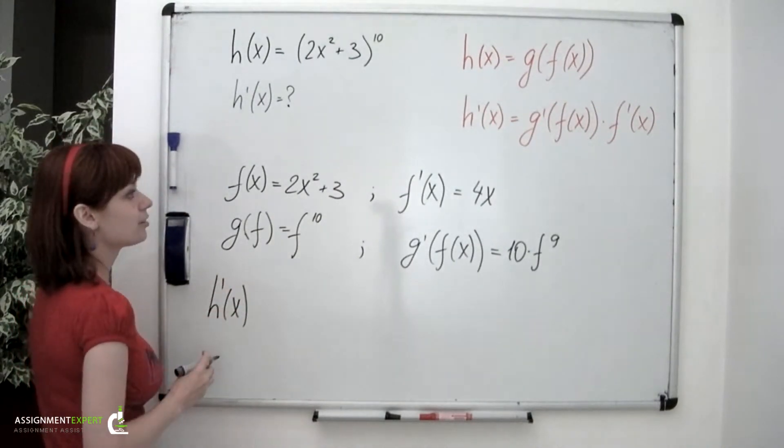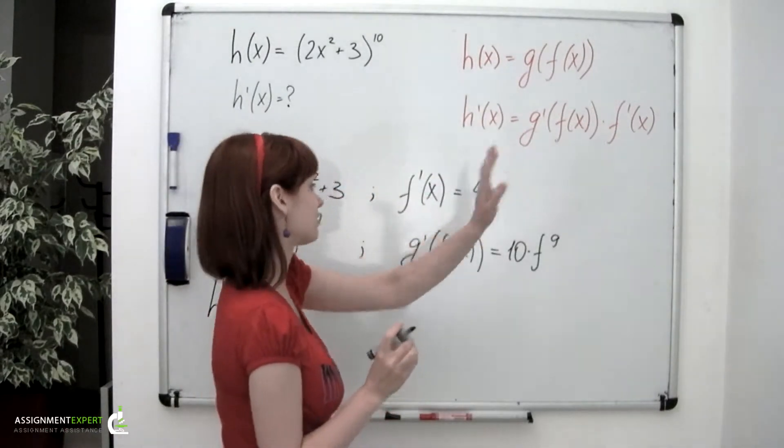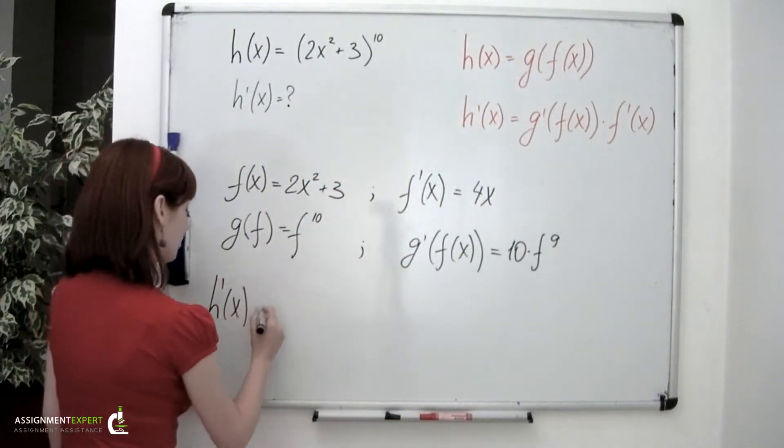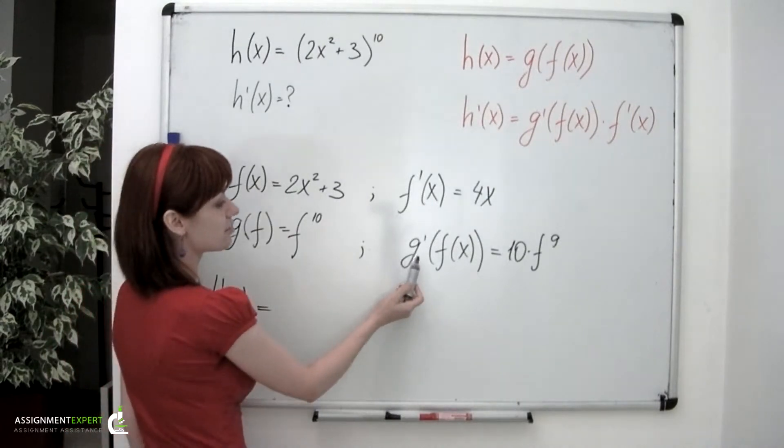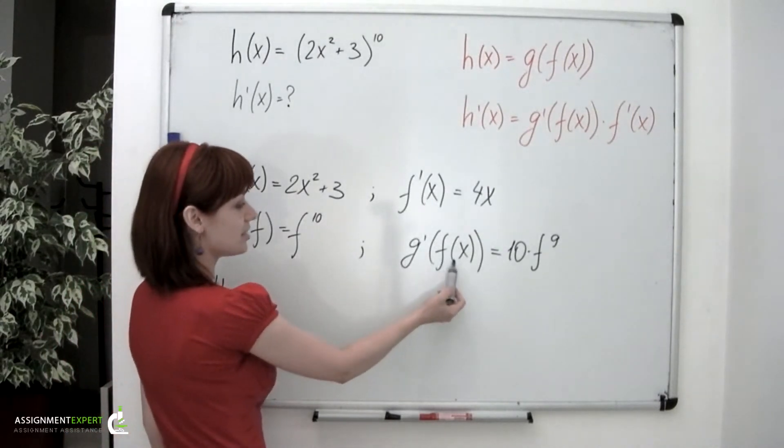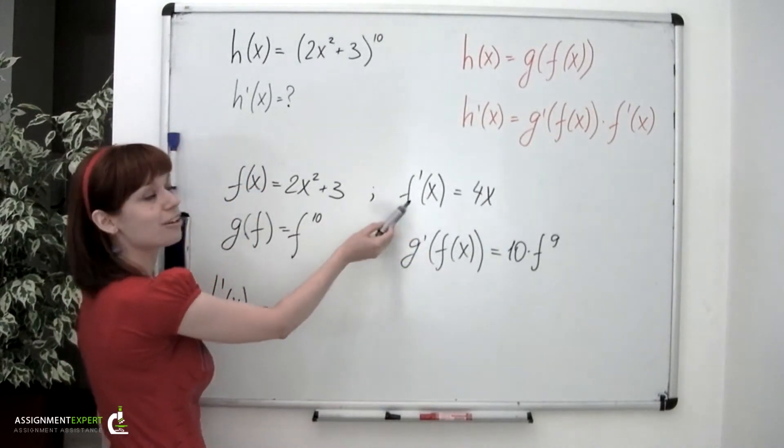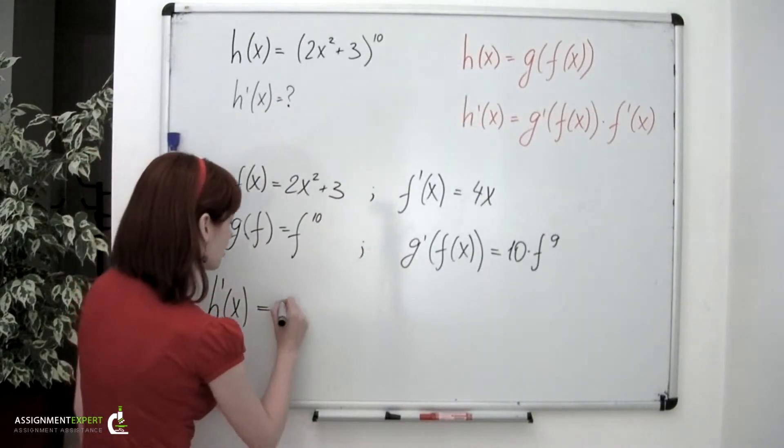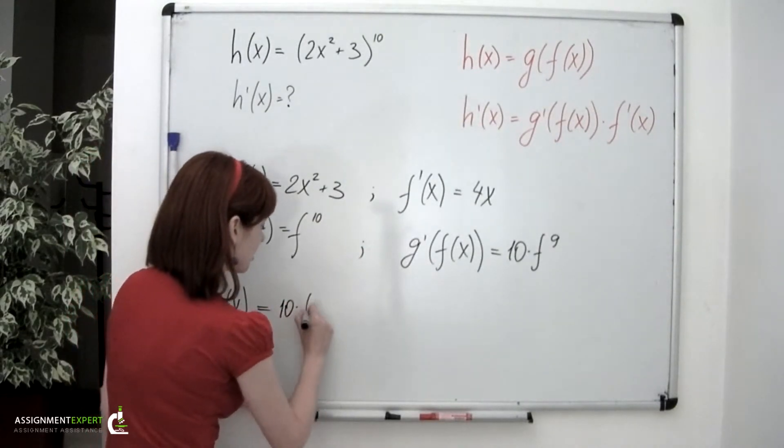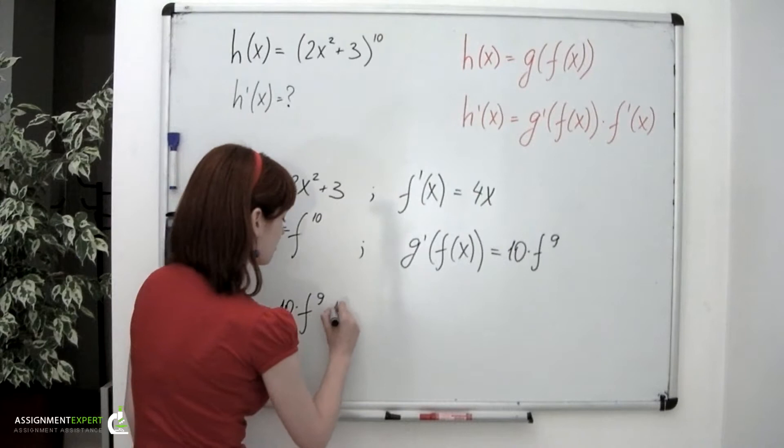According to the formula we have written down over here, we multiply derivative of the outside function evaluated at the inside function by derivative of the inside function. So we get 10 times f to the 9th times 4x.